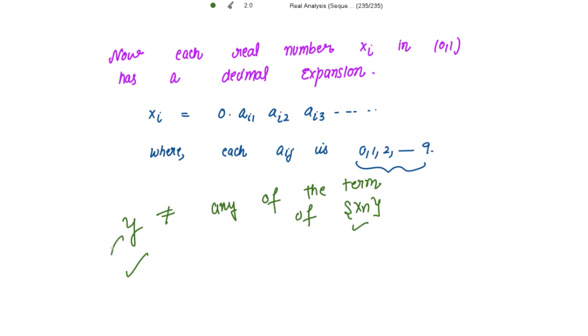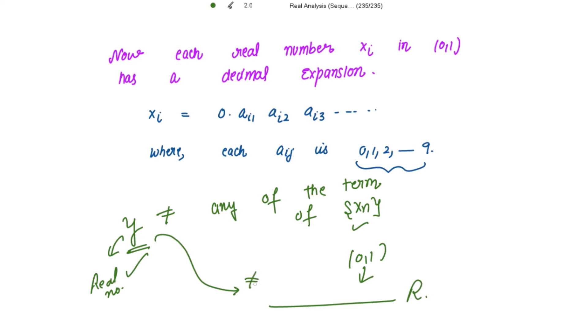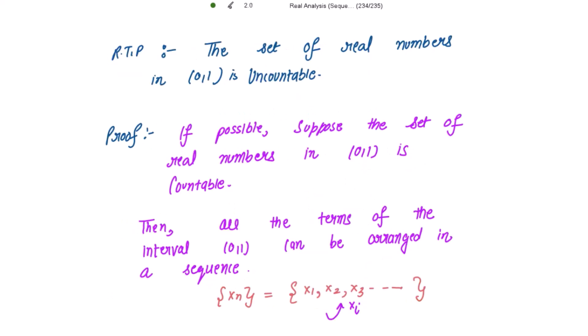But y is a real number, and the interval (0,1) contains all these real numbers. This y is not equal to any term belonging to the set of real numbers in this open interval — so that will be a contradiction. Then we say our supposition was wrong, and the set of real numbers should be uncountable.